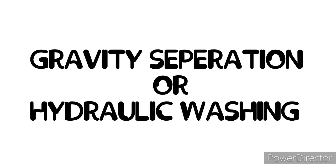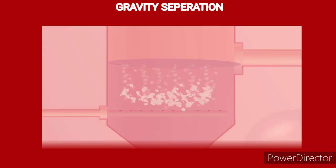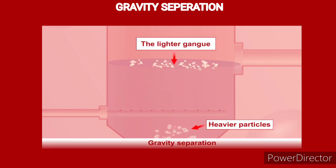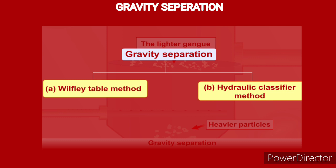Gravity Suppression or Hydraulic Washing: The separation of heavier particles from the lighter gang impurities is carried out by Gravity Separation. This can be done by two processes: the Will Fly Table Method and the Hydraulic Classifier Method.